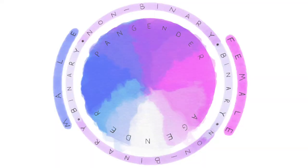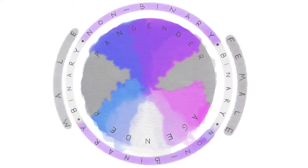The next part of the map is an outer ring, which covers binary and non-binary. Binary genders are going to be male and female — that's it. Non-binary genders are going to be anything between or outside of those two. This is a term people will typically use for themselves when they want to simplify, or they're not quite sure where they fall on the map.